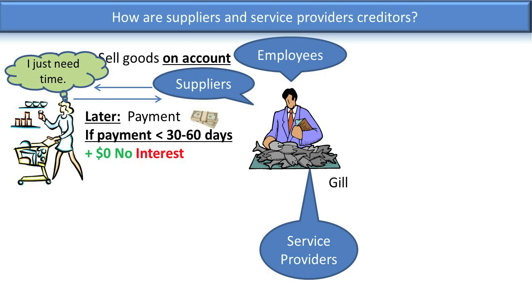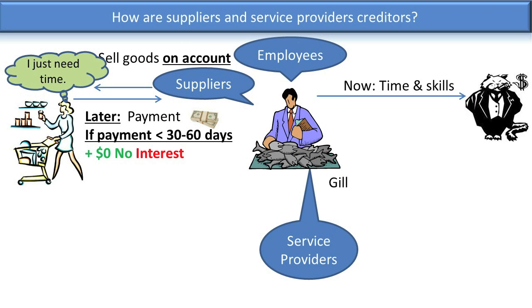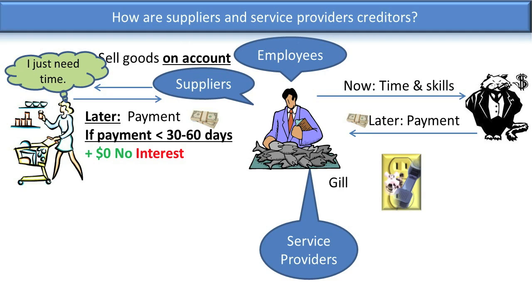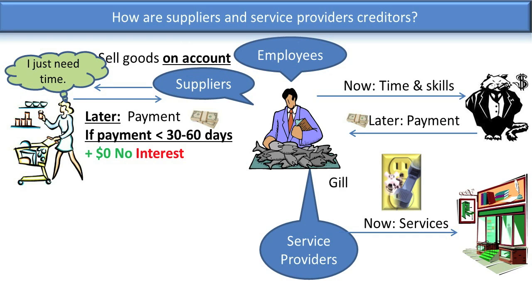Gill could also represent employees as service providers, because employees often provide services to their employers on account — they work first and then get paid later. In addition, Gill could represent electric or utility companies such as water, gas, phone, cable, sewage, etc., that provide utility services to customers and then bill them asking them to pay later.